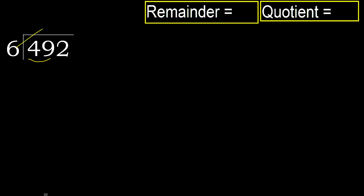6 multiply by which number is nearest to 49 but not greater? 6 multiply by 9 is greater. Multiply by 8 — 48 is not greater. Subtract: 49 minus 48 is 1.